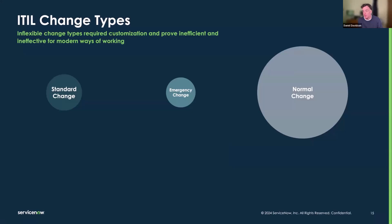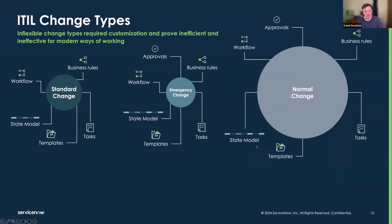Quickly on ITIL change types — we covered this in depth in the last call. There are a load of technical things around these changes: business rules, approvals, workflow, state models, templates especially around standard change, and tasks that get spawned when we make changes. Today we're talking about just a subset of these. By pulling them out and making them into components, you get a less risky approach to transforming the change process.